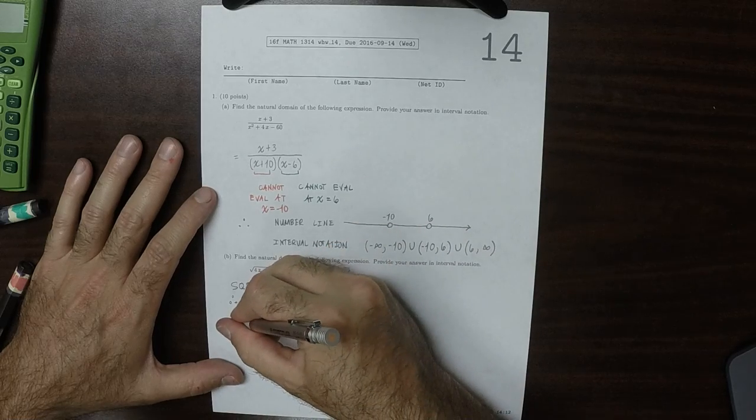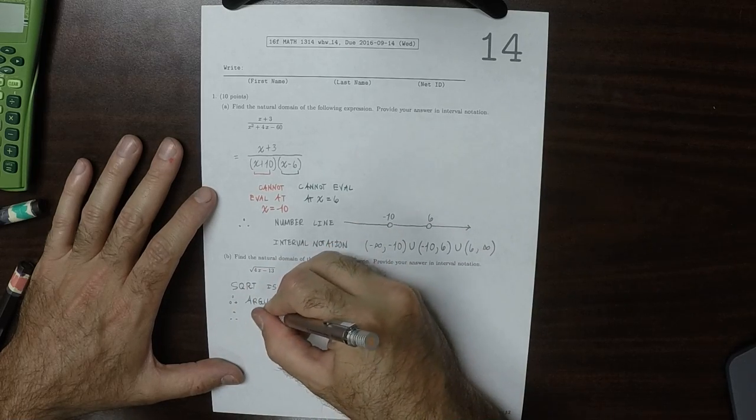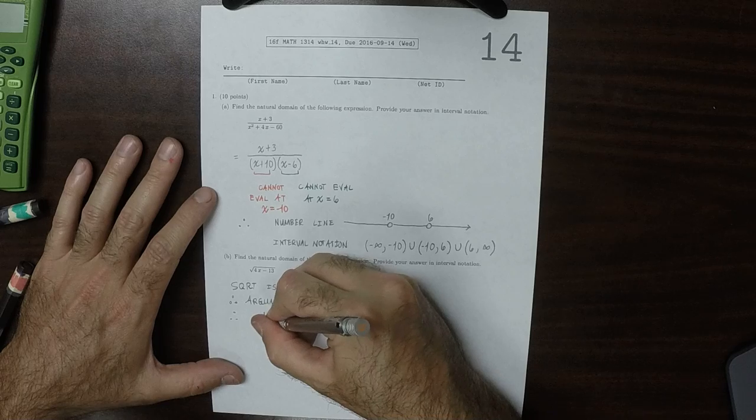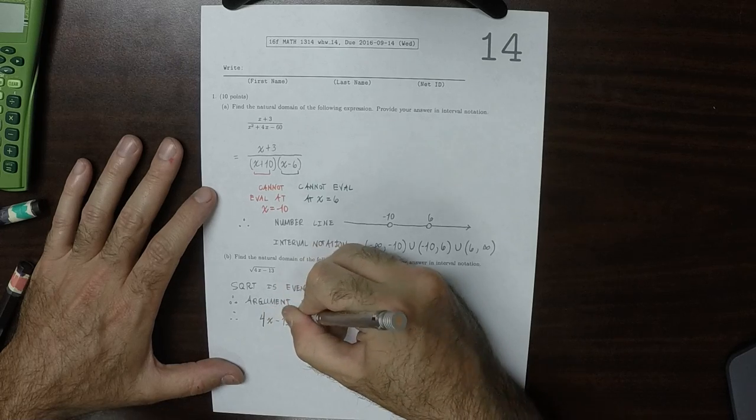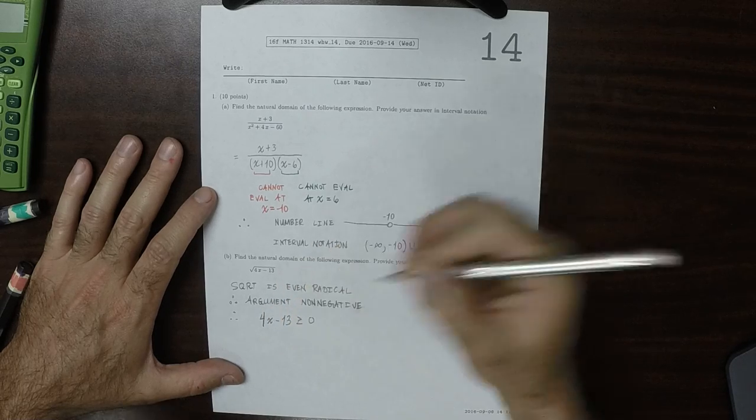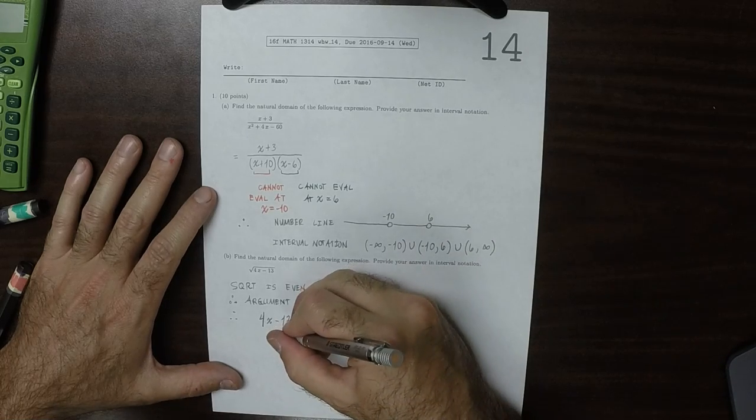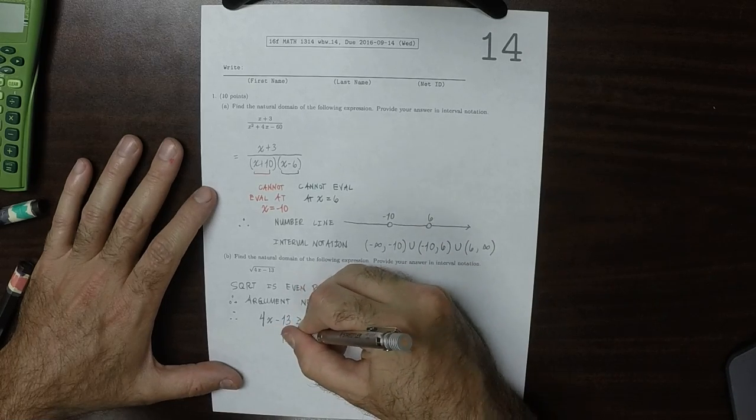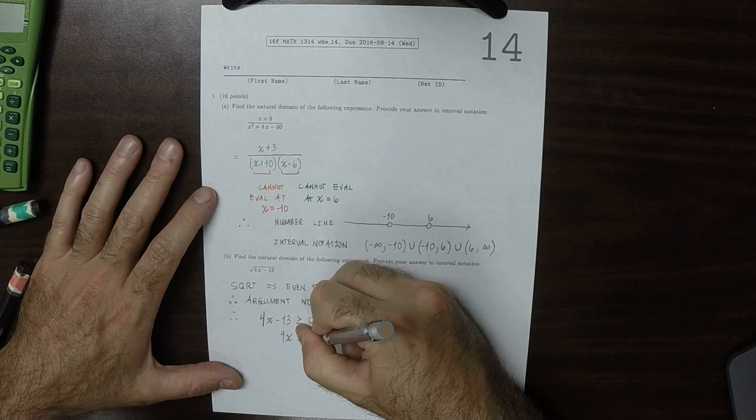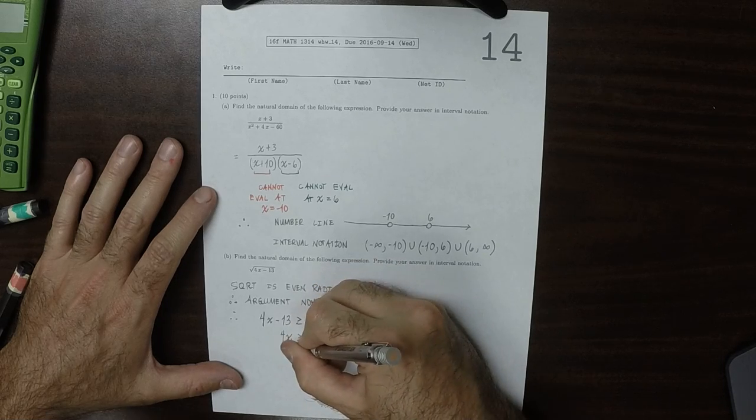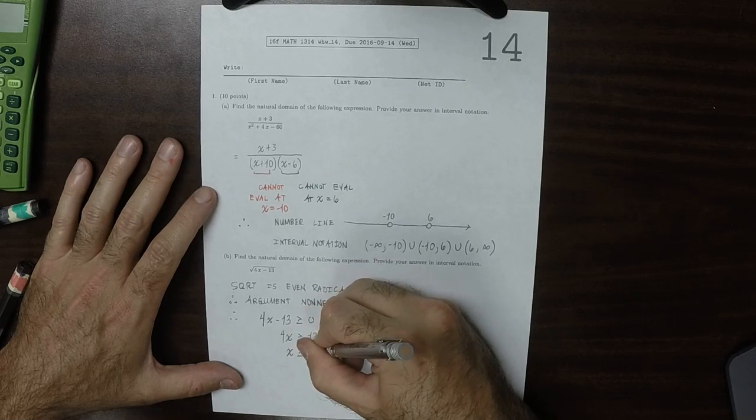As a result, algebraically what's required, is we need 4x minus 13 to be greater or equal to zero. So then it must be the case that 4x is greater or equal to 13. So x is greater or equal to 13 over 4.